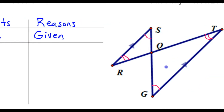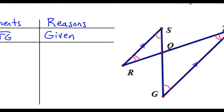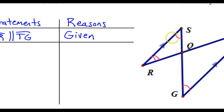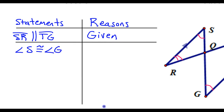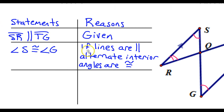My goal is to prove these triangles are similar, so I'm going to use angle-angle similarity. I need to get my angles going. First, I'll say angle S is congruent to angle G. The reason is: if lines are parallel, alternate interior angles are congruent.